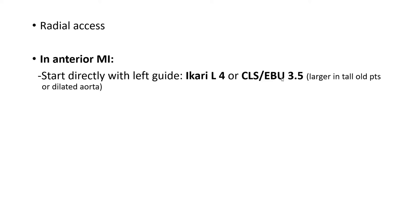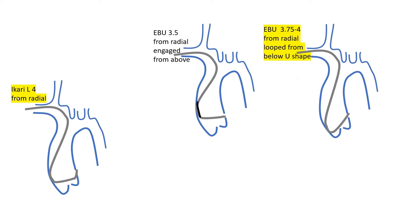I may choose 4.5 ICARI or CLS/EBU-4. The reason I use a larger arm with ICARI versus EBU/CLS is that ICARI-LEFT is a less supportive guiding catheter. For that reason, I always try to engage ICARI-LEFT from below, loop it onto the aortic valve and the opposite aortic wall. I need a longer arm. The EBU and CLS system are more supportive, so you can get good support engaging from above or below. Engaging from above, a 3.5 size is enough; from below, I would need 3.75 to 4. I have explained those in detail in a prior talk on left coronary engagement.